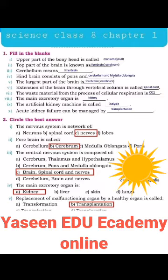The waste material from the process of cellular respiration is CO2. The main excretory organ is kidney. The artificial kidney machine is called dialysis. Acute kidney failure can be managed by transplantation.